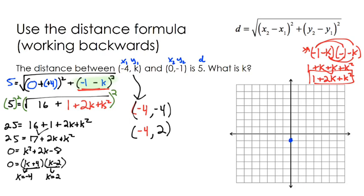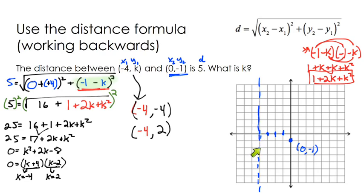If I have the point 0, negative 1 shown in blue, we're looking at points that take the form negative 4, k — in other words, points that have an x-coordinate of negative 4. If I go to where x is negative 4 on this graph, that would be all of these points. Any point on the vertical line x equals negative 4 takes the form negative 4, k — like negative 4 comma 6, or negative 4 comma 0, or negative 4 comma negative 2. You just need to figure out which ones are a distance of 5.